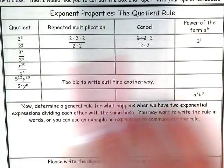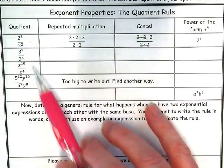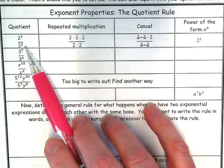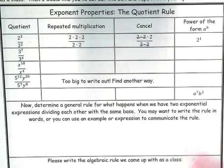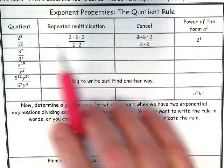So if you notice with the quotient rule, all of our examples over here are rational numbers. We have some fractions here with exponents, and let's practice by looking at the first one.